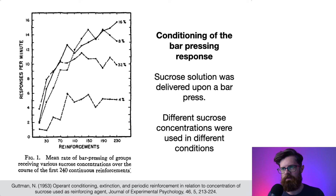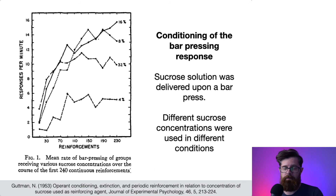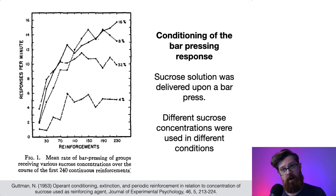We've got a couple of different curves here, labeled by percentages. These percentages refer to the concentration of the sucrose solution. For the 4 percent — that's the weakest — we can see that the rats learned to press the bar, but they weren't really doing it that much. Maybe it's not quite detectable, maybe it's too weak. However, around 8 to 16 percent sucrose solution, this results in the highest rate of bar pressing.